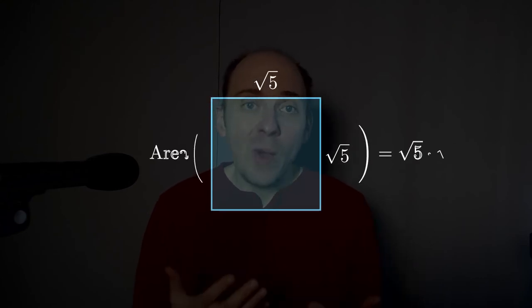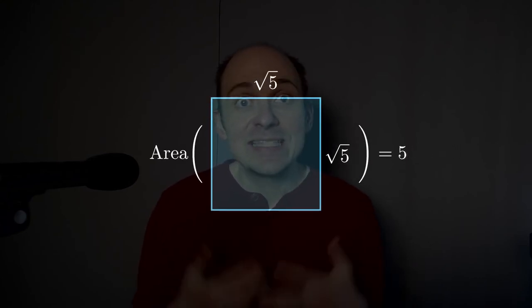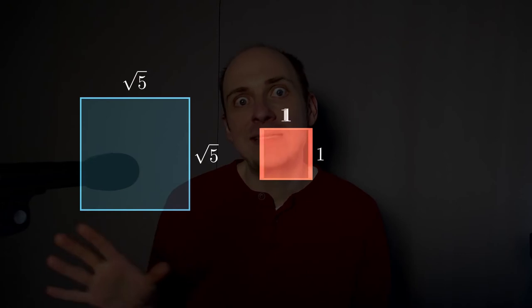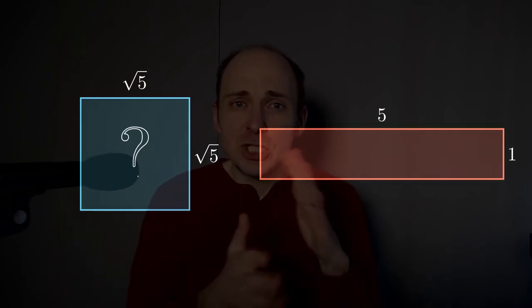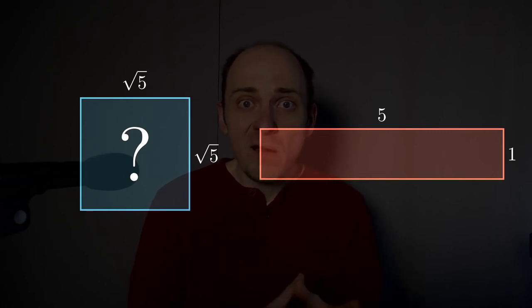I think that's a fun answer. Anytime in mathematics we answer a question, we should question the answer. We should think if there are other questions we could ask that are like that question. For example, you can ask the same thing for a square root of five by square root of five square. That's got area five, the same as a five by one rectangle. So it must be possible to chop up the square to get the rectangle. It's a fun thing for you to think about, so I encourage you to think about that.